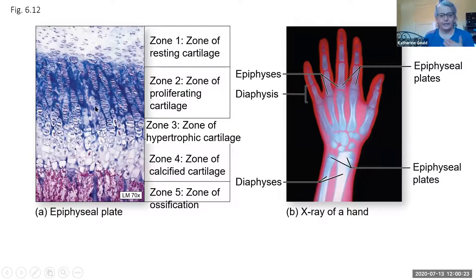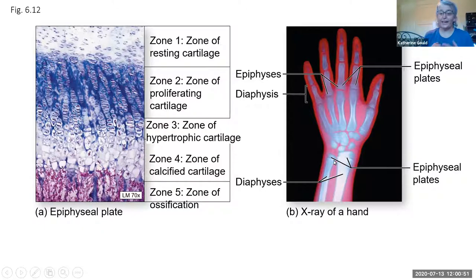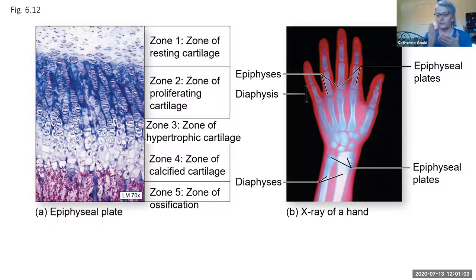At the epiphyseal plate there is a zone of resting cartilage, then a zone where cartilage cells are doing mitosis rapidly to create new cartilage, then a zone where they're hypertrophic — meaning growing a lot — then where they're becoming calcified, and finally an ossification layer where it's becoming bone. We can see these epiphyseal plates on x-ray. We can do an x-ray of the hand and wrist of a child and figure out how old they are because these ossification centers close up at a very predictable rate.